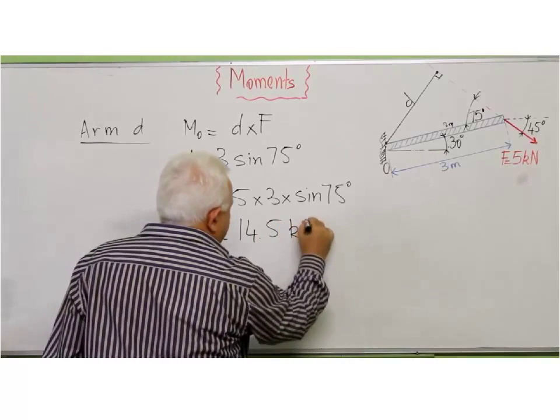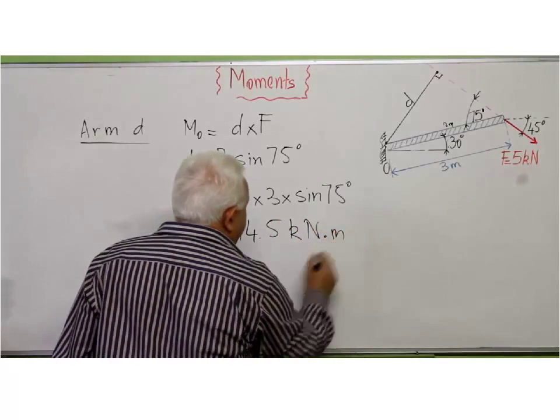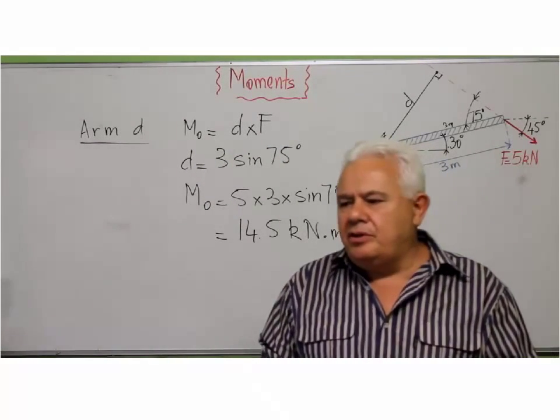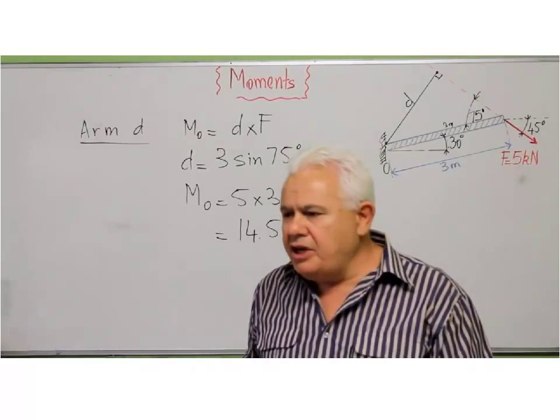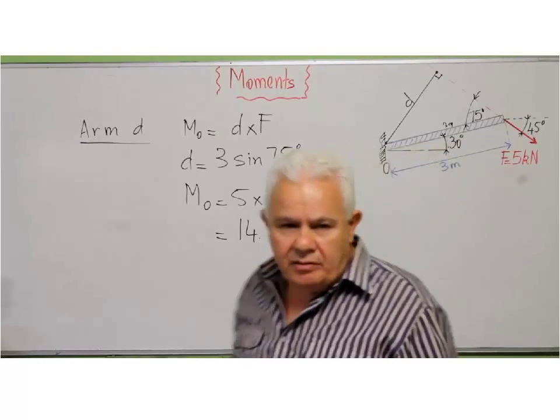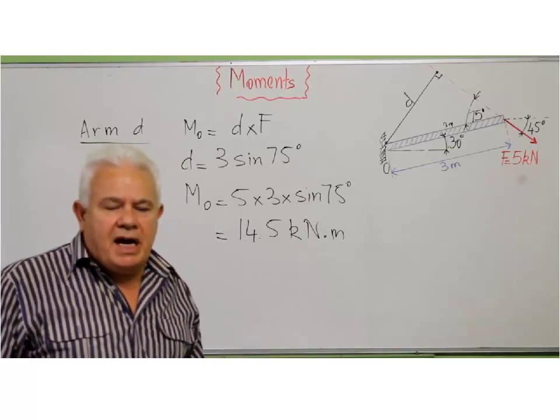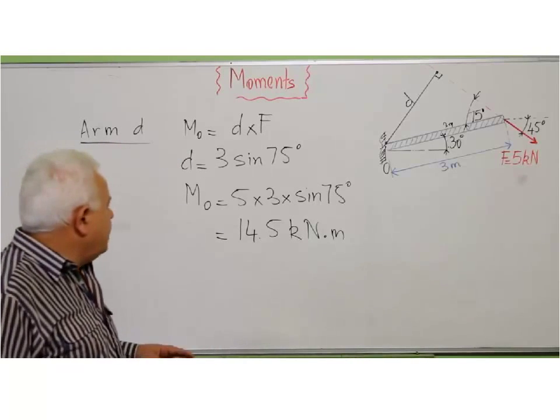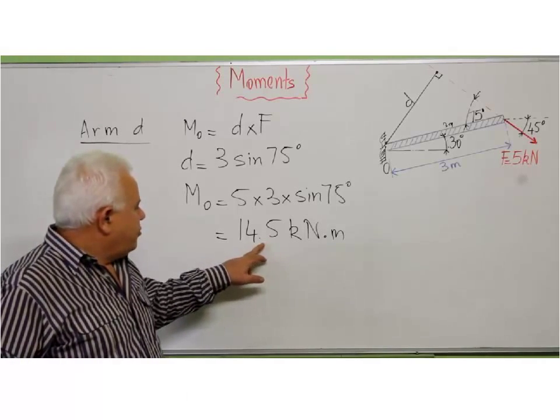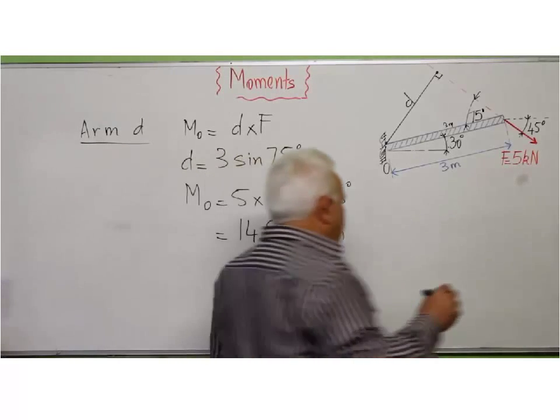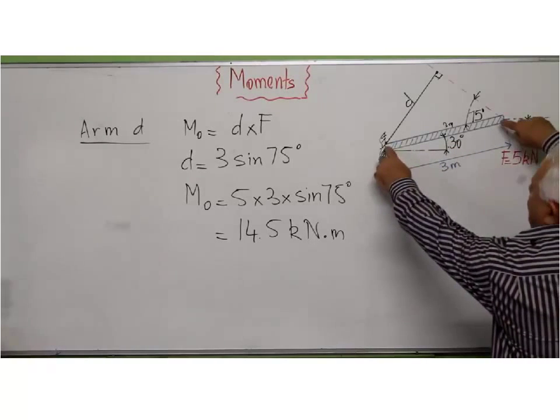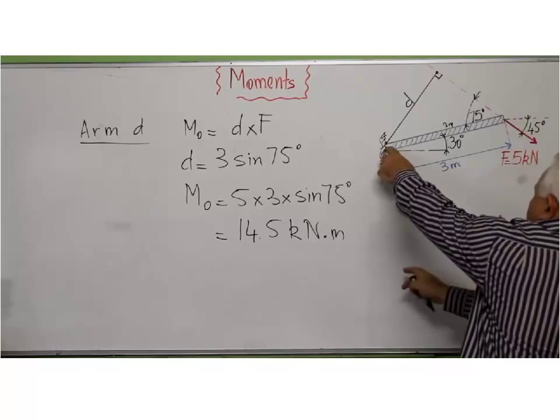Of course, now I haven't talked about the direction of the moment, because the moment in fact is a vector. A vector has a magnitude and direction. So the magnitude of the moment is 14.5 and the tendency to turn this rod is clockwise.